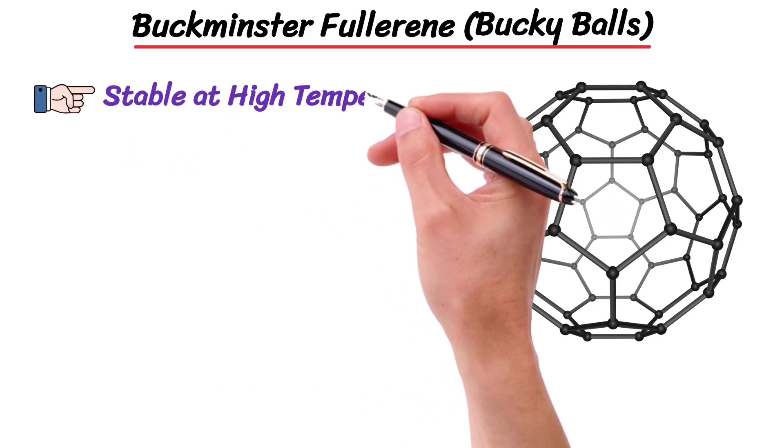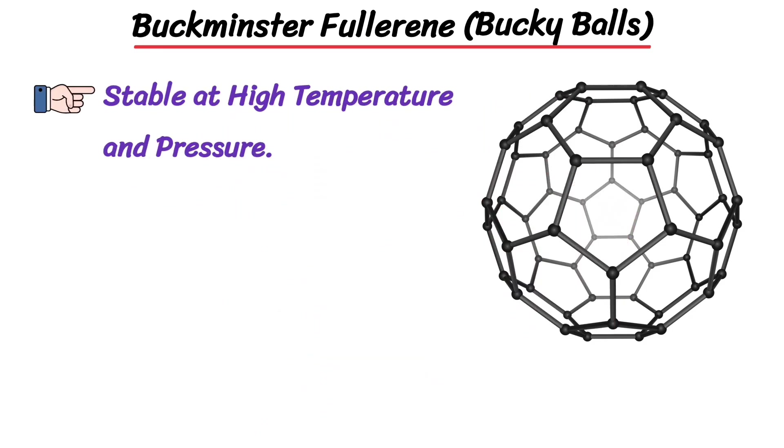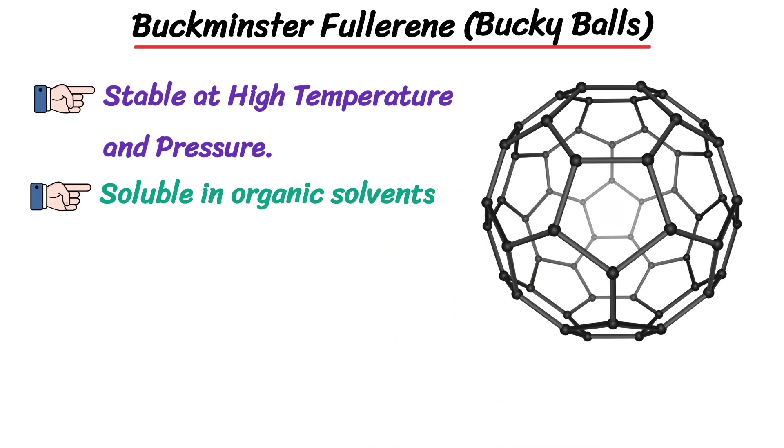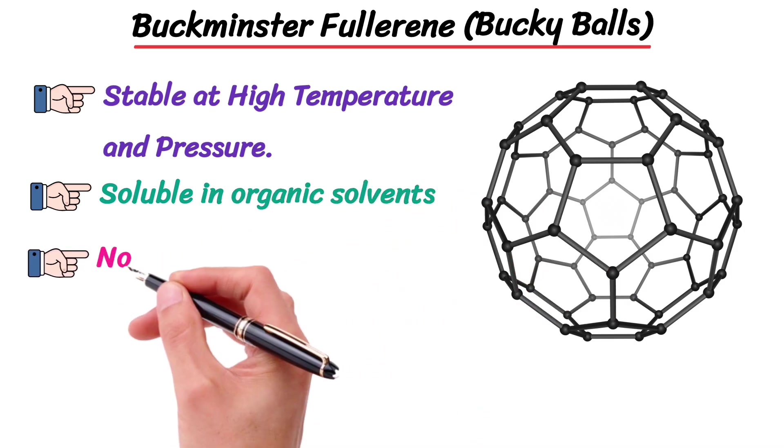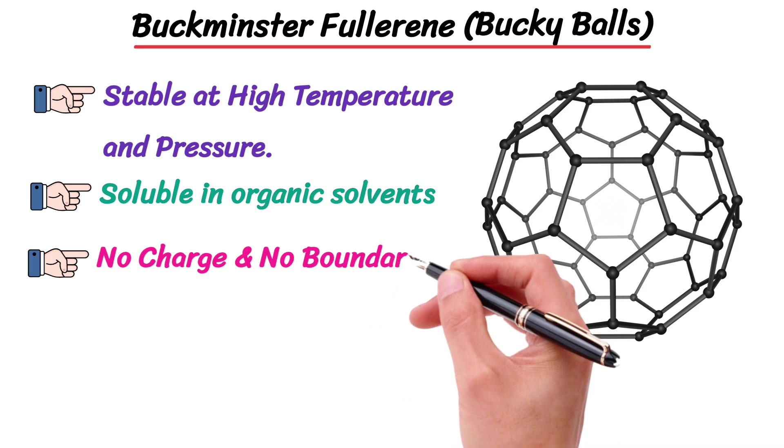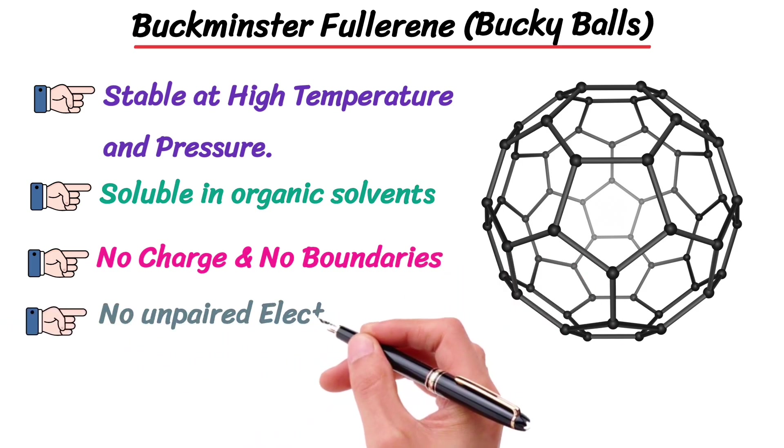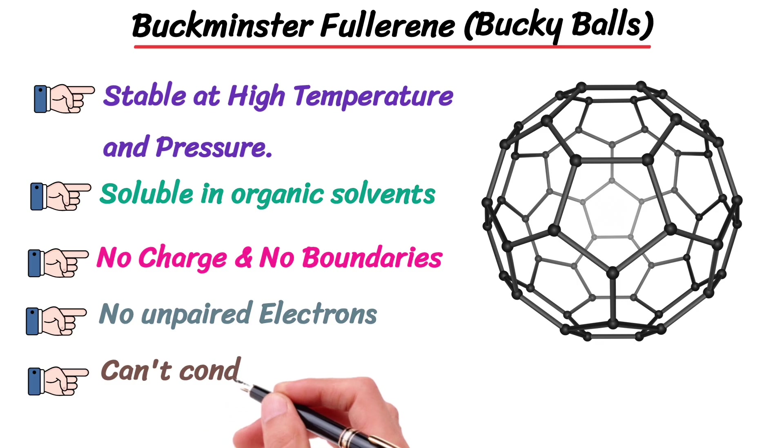Fullerenes are stable at high temperatures and high pressures. Being covalent in nature, they are soluble in organic solvents. The fullerene structure is unique because it is not charged, no boundaries, and has no unpaired electrons, so cannot conduct electricity.